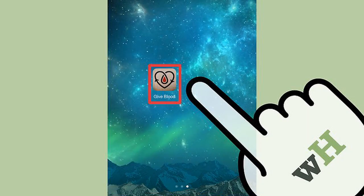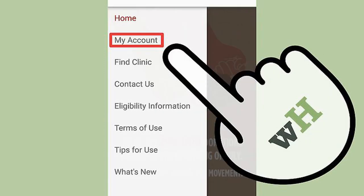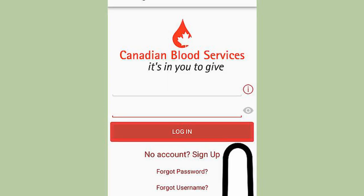Phone: Open the Give Blood app on your phone. Click on the menu icon in the top left corner of the app. Select My Account in the left menu that opened up. Enter your login details and press Login.